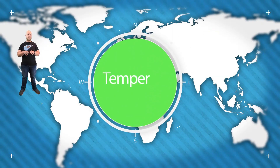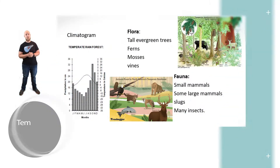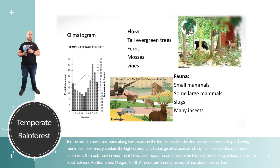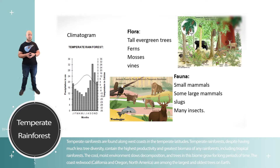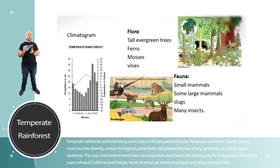The temperate rainforest is a rainforest found far away from the equator. It commonly has a similar temperature curve to that of a deciduous forest but gets significantly more rain. The dominant plant community is very tall trees, however in a temperate rainforest you get significantly more ferns and mosses on the forest floor than in a tropical rainforest. As far as animals, you get small mammals, a few large mammals, slugs, and a bunch of insects.